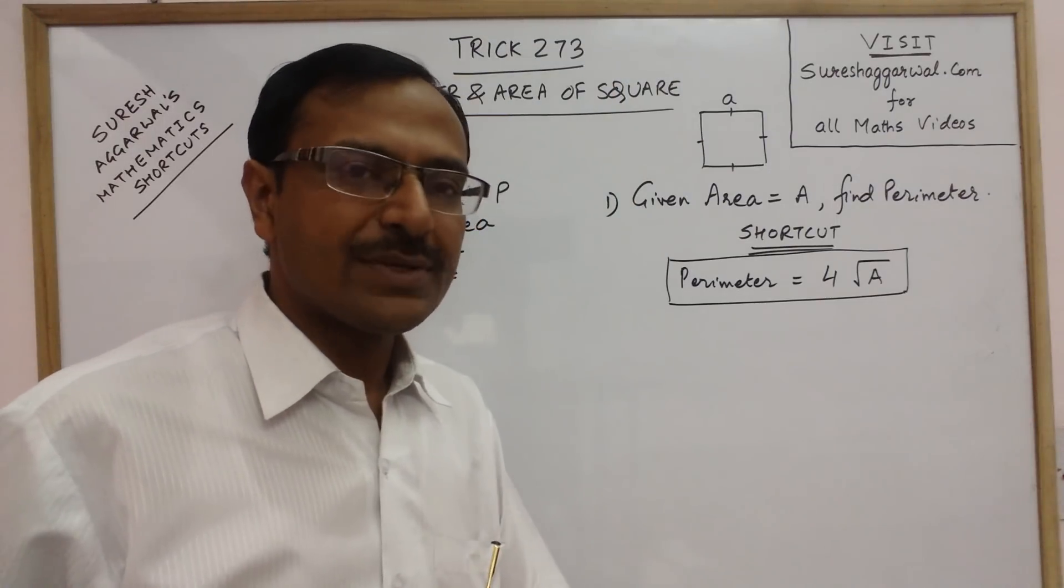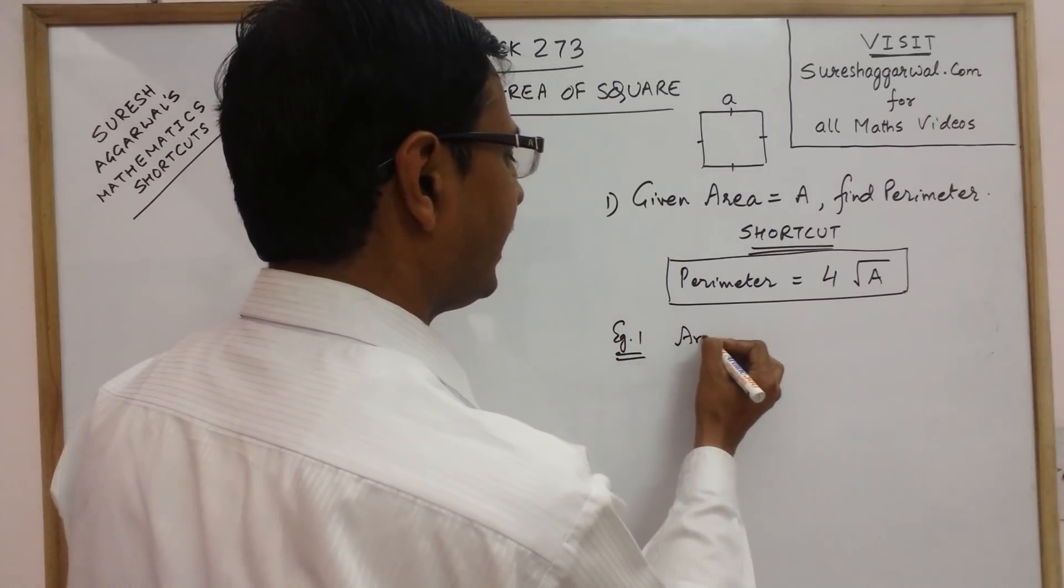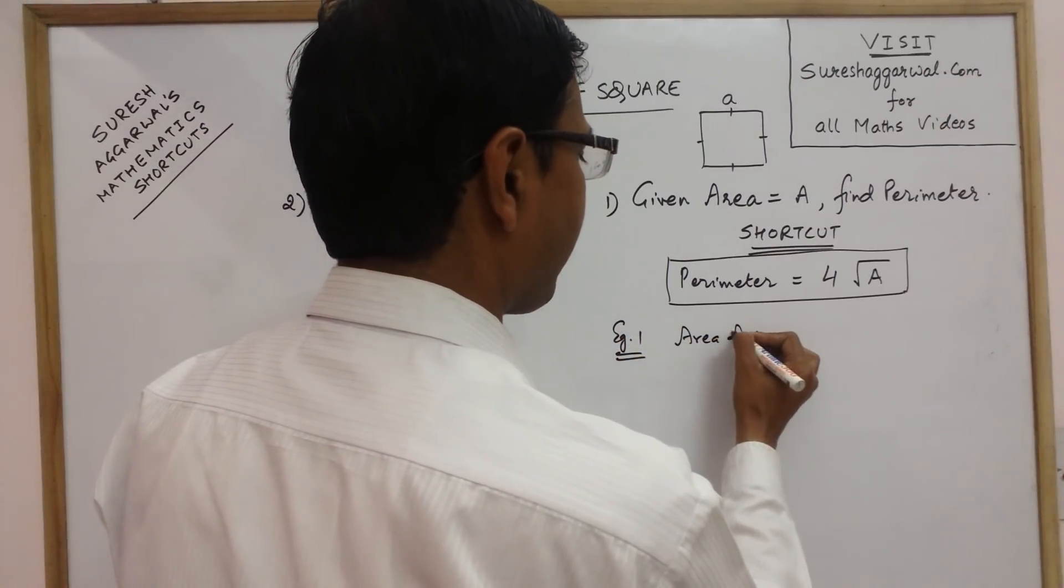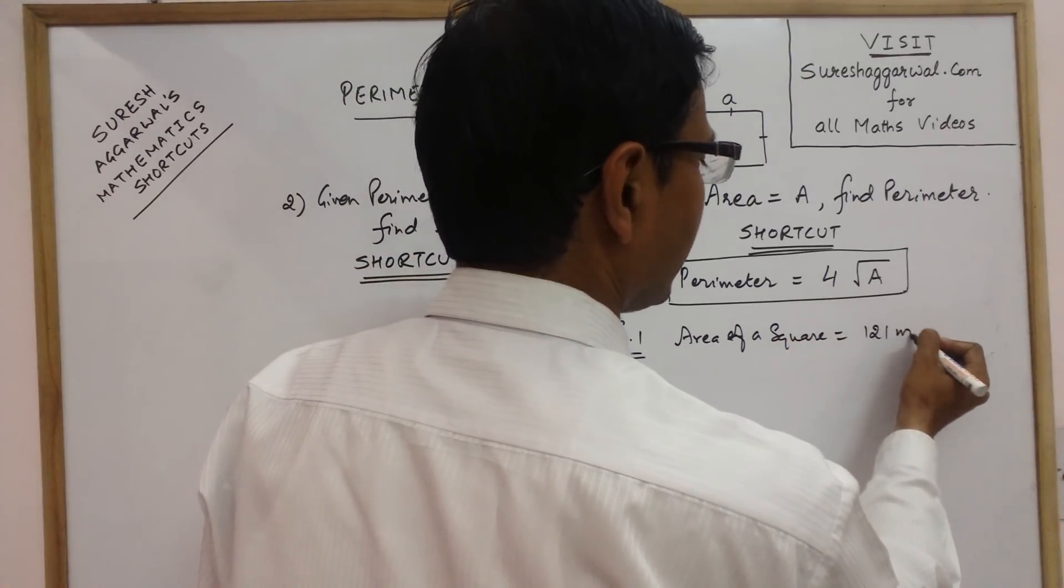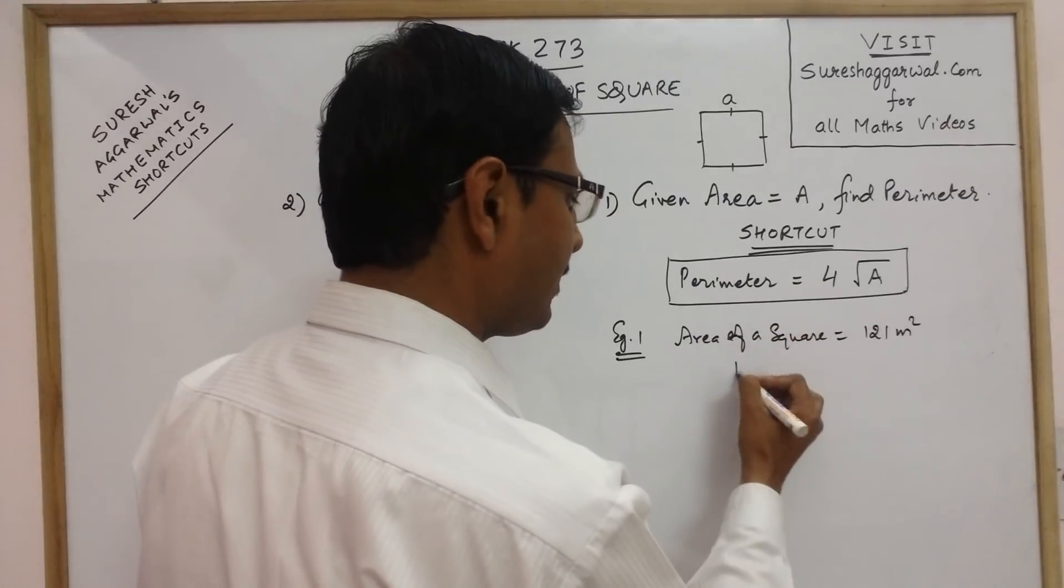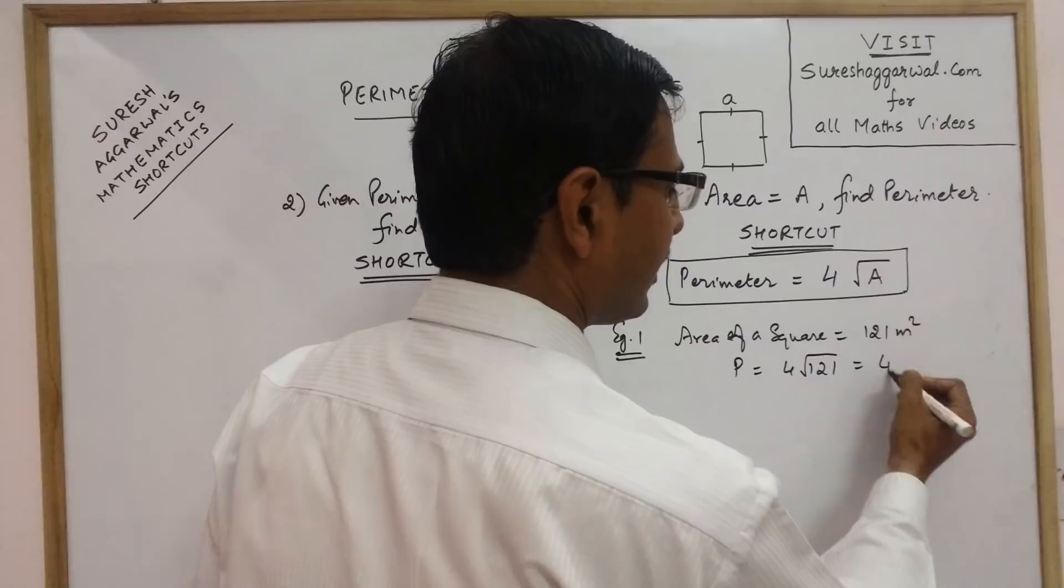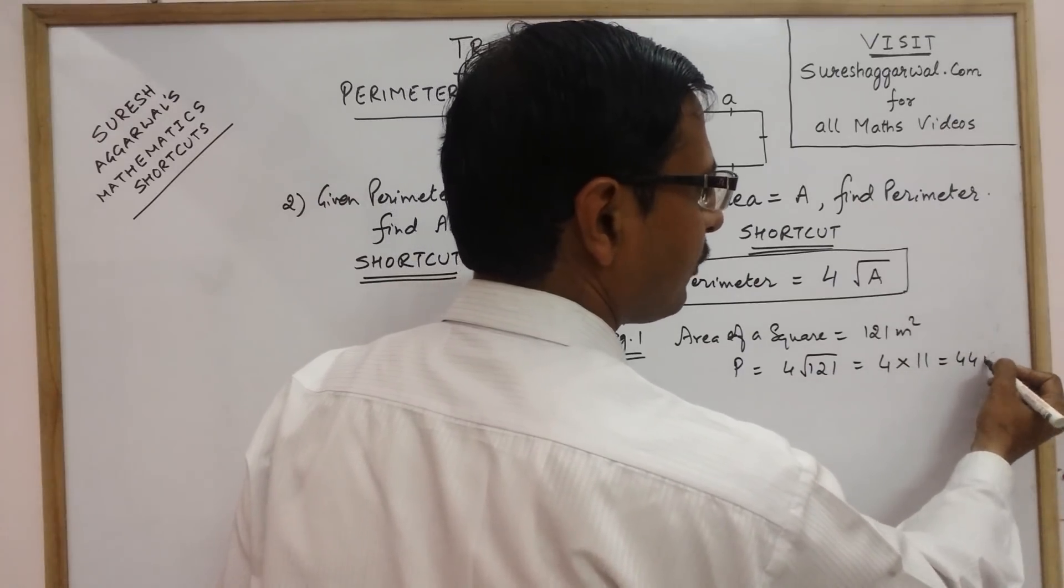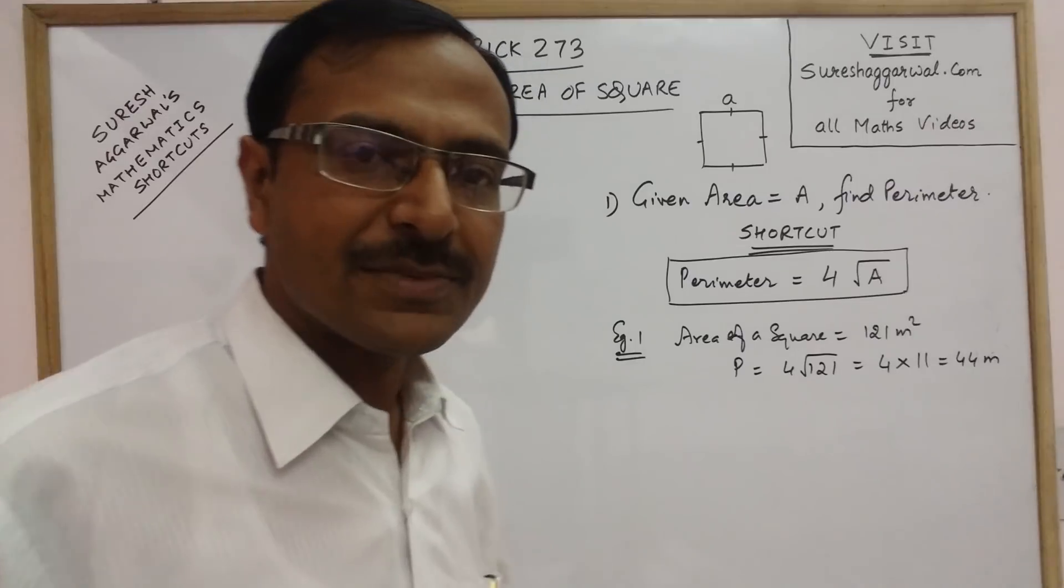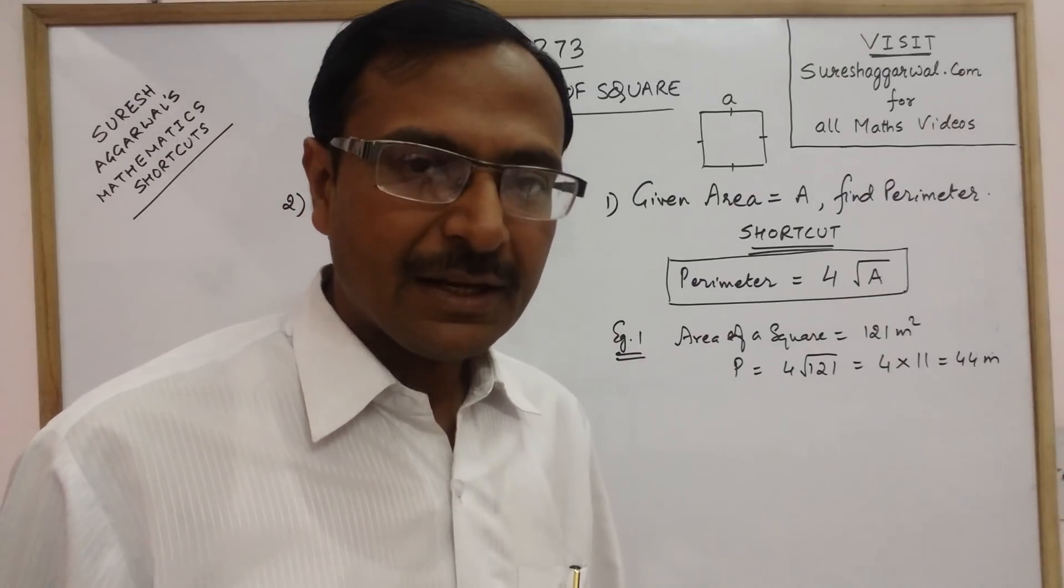Now let us take one or two examples. Suppose we are given that the area of a square is 121 meter square. We need to find the perimeter, so just put it here. Perimeter is four times square root of 121, and if you are aware of the square roots, 121 square root is 11. So you have the answer as 44 meters. The perimeter comes out in hardly two seconds without any written calculation.